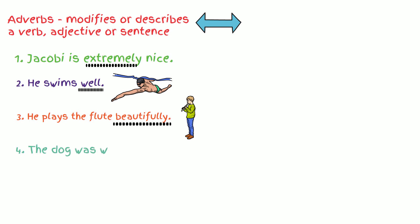Number four. The dog was walking awkwardly. What would really help us with this? Well, we know the verb is walk. How was the dog walking? Awkwardly. So awkwardly is the adverb.